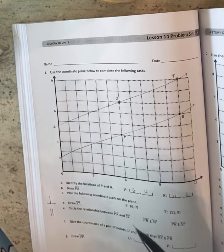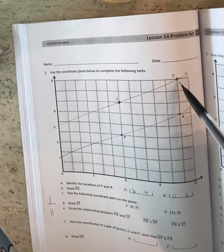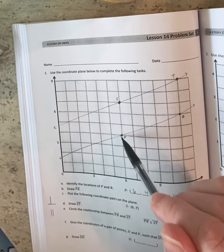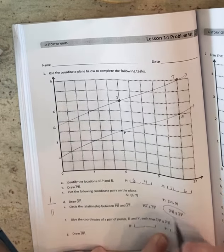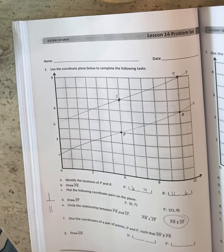Well, they look parallel to me. I can check that by counting the distance between the points between T and R is one, two, three between S and P is one, two, three. So they are parallel. It will always be three units apart like that.